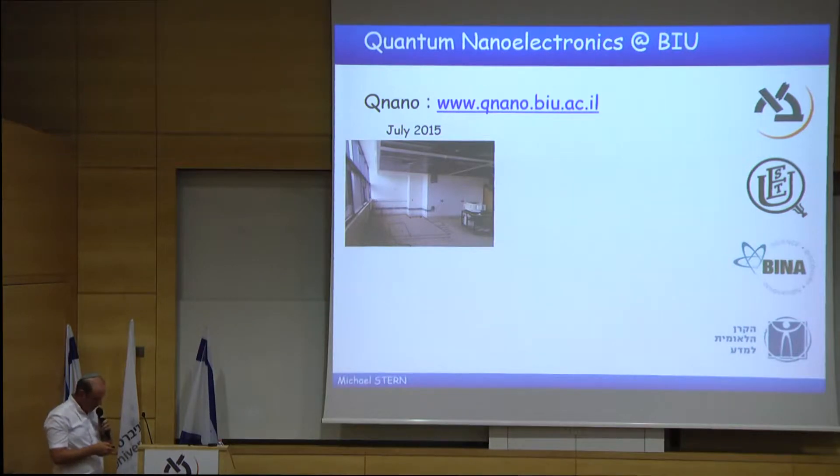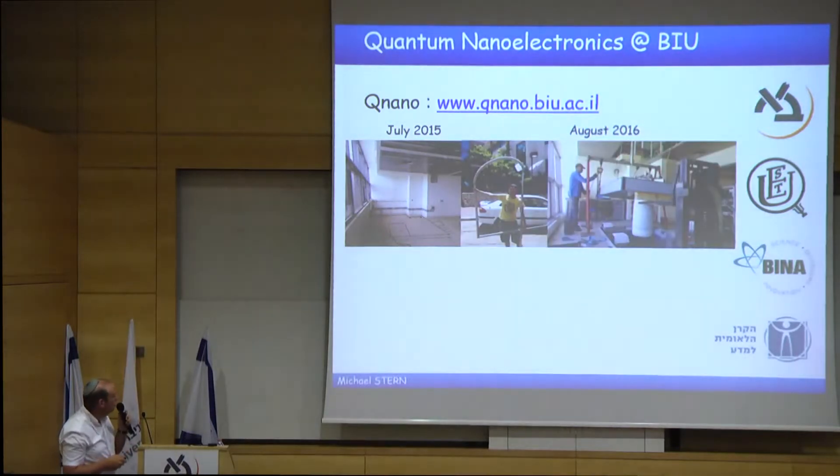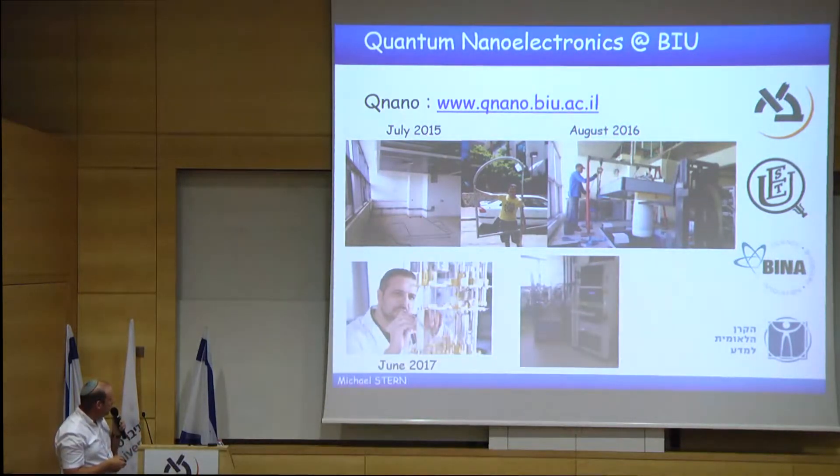This is the laboratory. That was the laboratory in 2015. We made some progress. In 2017, almost one year ago, we have put some pipes in the lab. Eventually, we installed a dilution fridge, and we are currently trying to make work with this fridge and to prepare samples.